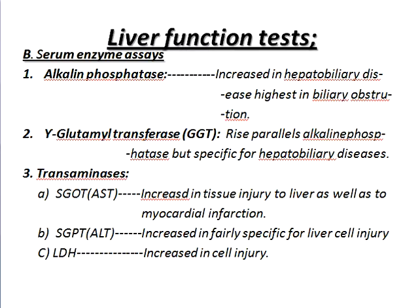Liver enzymes. Alkaline phosphatase: increased in hepatobiliary disease, highest in biliary obstruction. Gamma-glutamyl transferase, GGT: rises in parallel with alkaline phosphatase but is specific for hepatobiliary disease. Transaminases — SGOT and SGPT and LDH. SGOT or AST: increased in tissue injury, including liver as well as myocardial infarction. SGPT and LDH also increased in tissue injury.